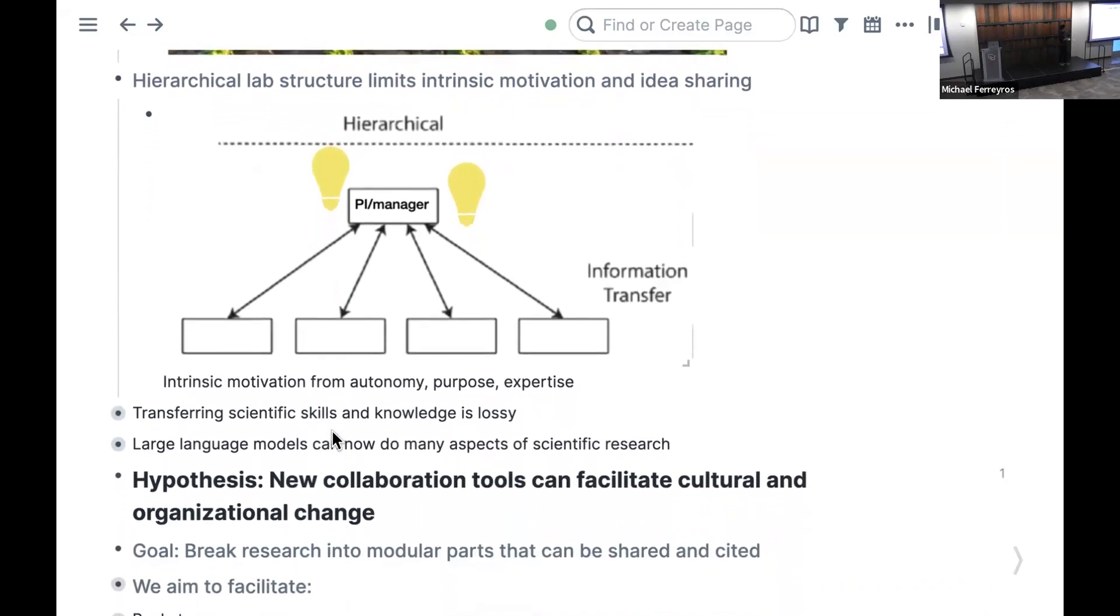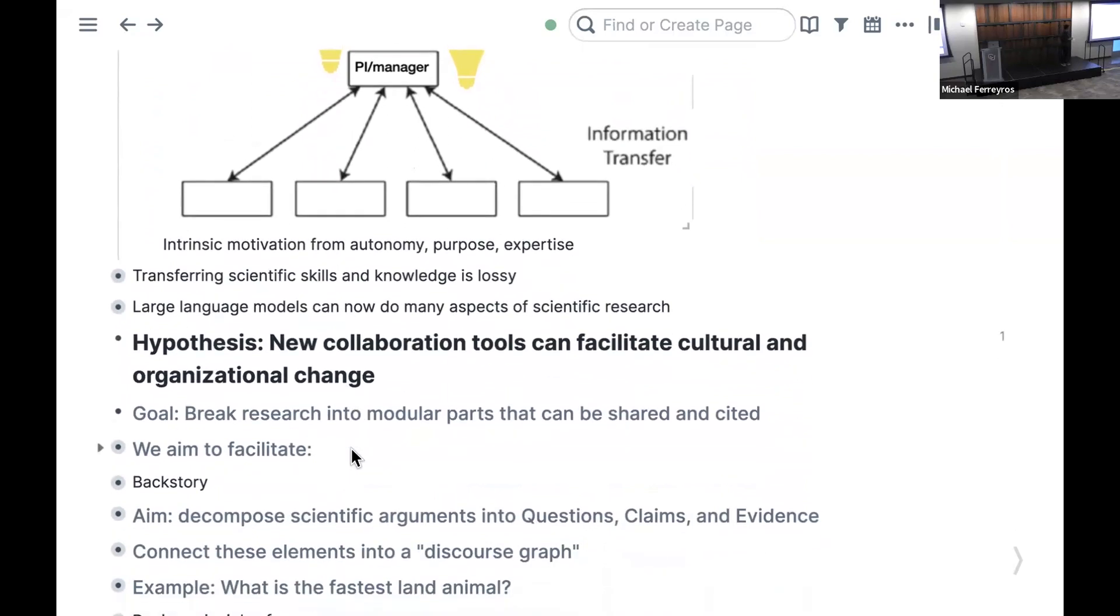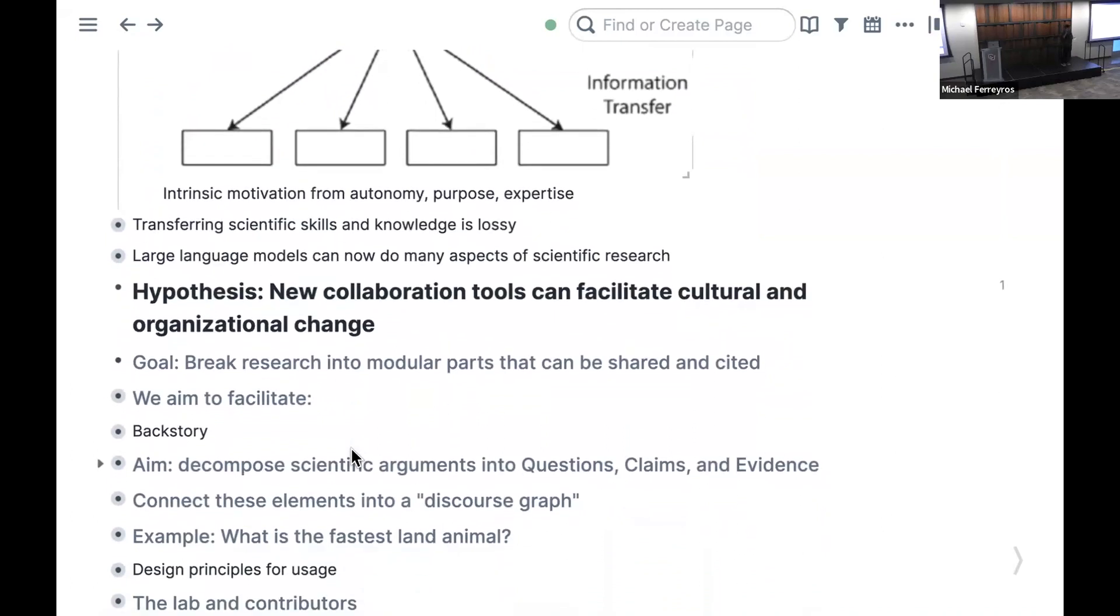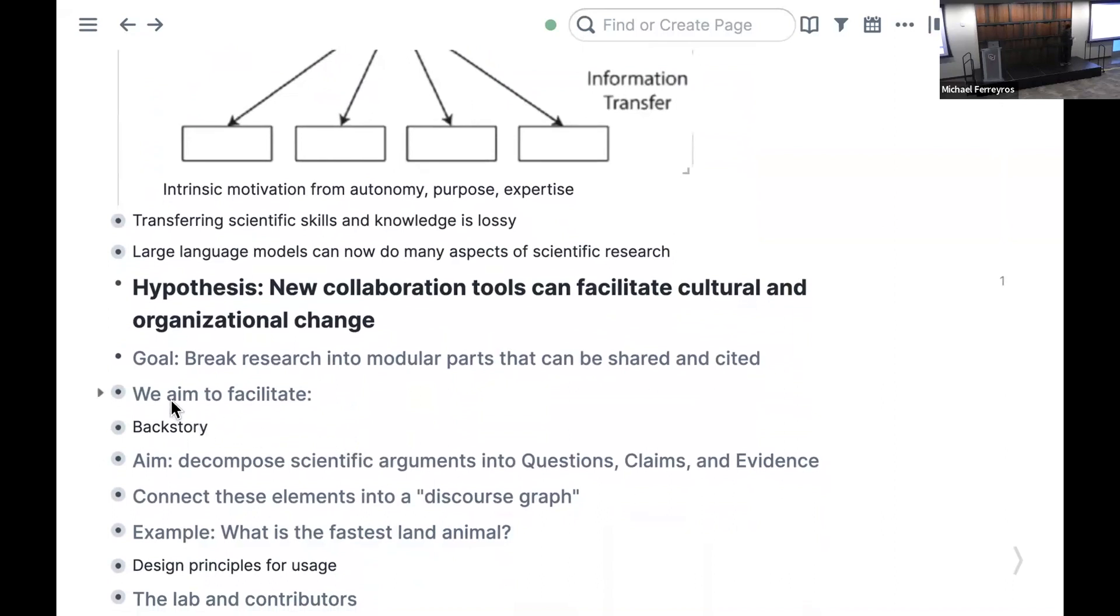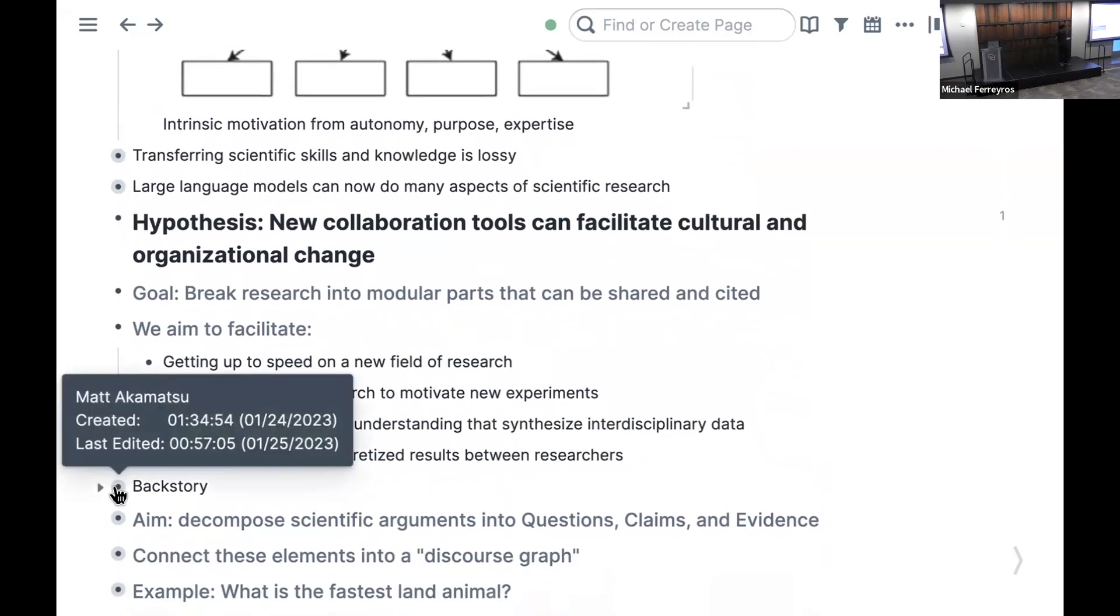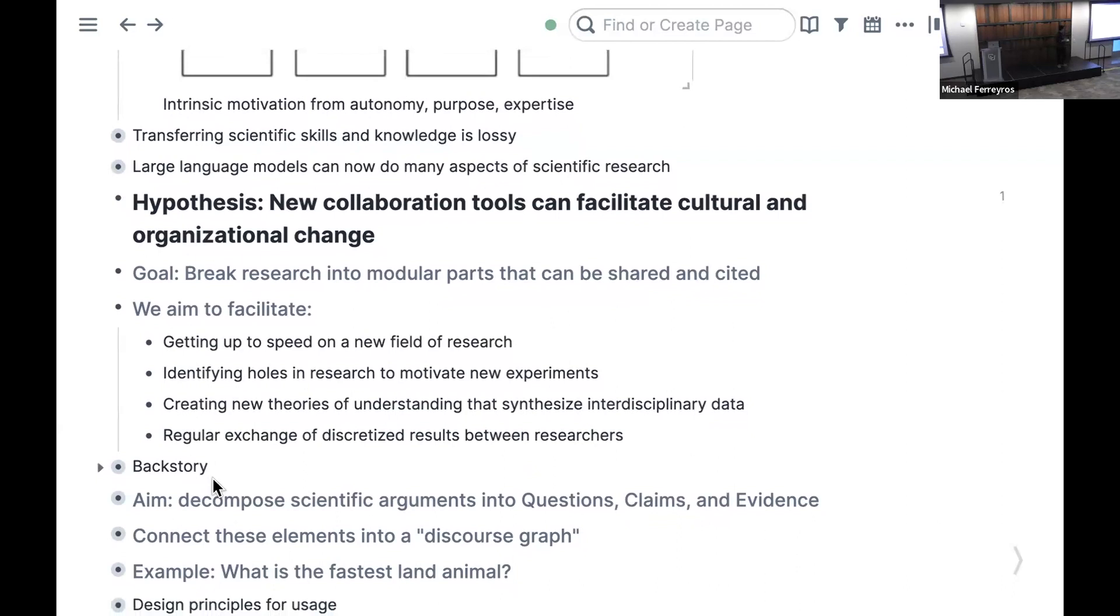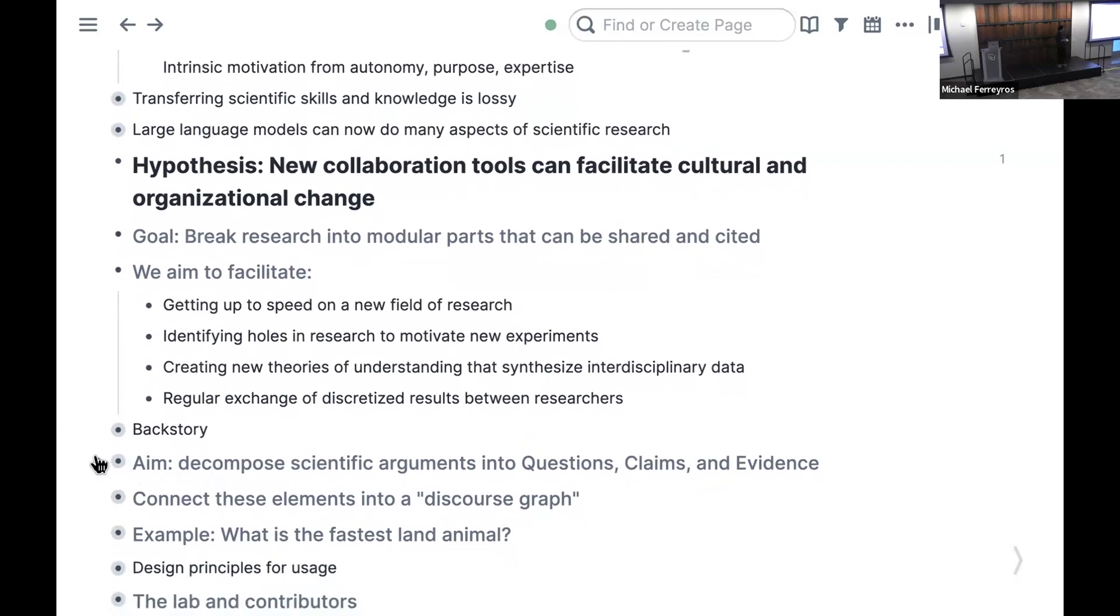So how are we going to address this issue? Our hypothesis, like many of yours, is that new collaboration tools can facilitate cultural and organizational change. Our main approach is to break the research process into modular parts that can be shared, reused, and cited. We aim to facilitate having researchers get up to speed on a new field, identify holes in research that motivate new experiments, create new theories that synthesize interdisciplinary data, and enable regular exchange of discretized, nano-published research results between researchers sharing a common research question.